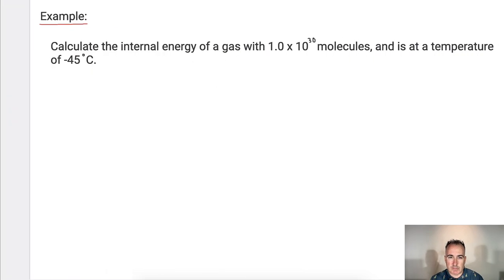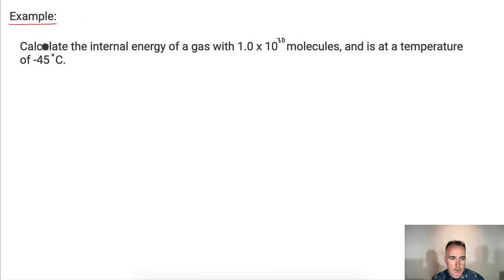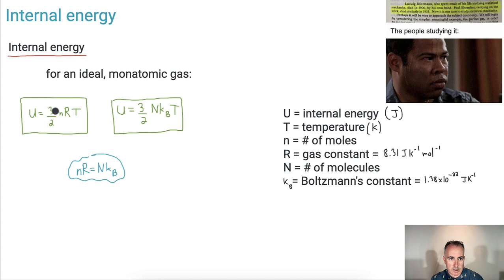Let's actually look at an example. We want the internal energy, so we want the letter U here. Right away, before doing anything else, that means we probably just need to write down this equation. So nRT or NkbT.